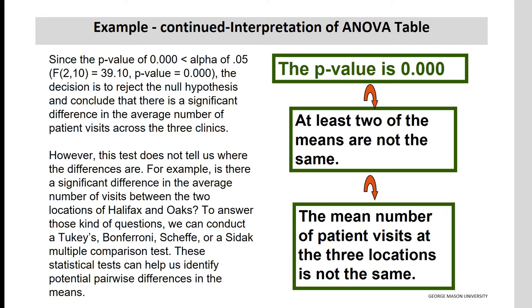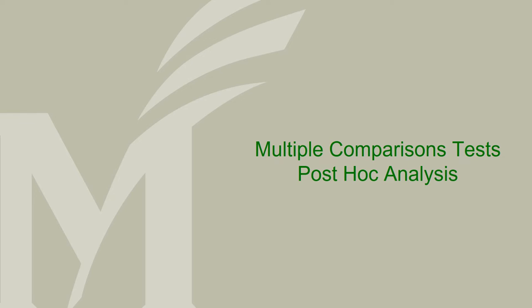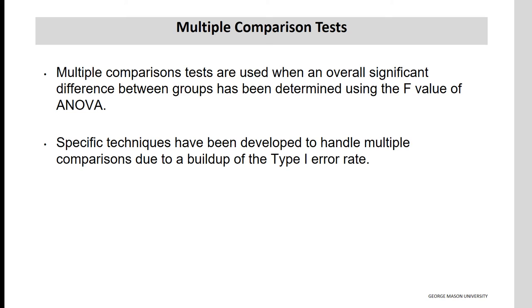These statistical tests can help us identify potential pairwise differences in the means. Next, we will discuss multiple comparison tests and post-hoc analysis. Multiple comparison tests are used when an overall significant difference in the averages between groups has been determined using the F-value of ANOVA.